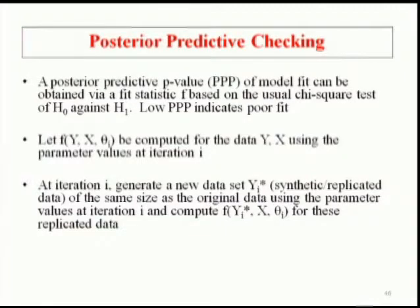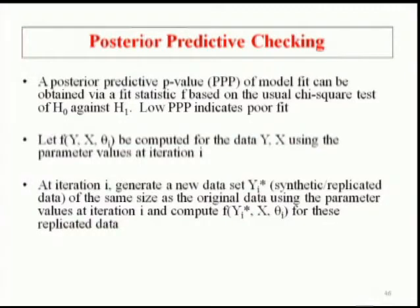We're concerned with a fit statistic F, based on the usual chi-square test of your model against an unrestricted model — H0 against H1. You may think of that in terms of a confirmatory factor analysis model: a covariance structure model where H1 is the unrestricted covariance or correlation matrix. We do the usual chi-square test computing the likelihood under H0 versus H1. Likelihood sounds like maximum likelihood, but we're only doing that in the testing phase.